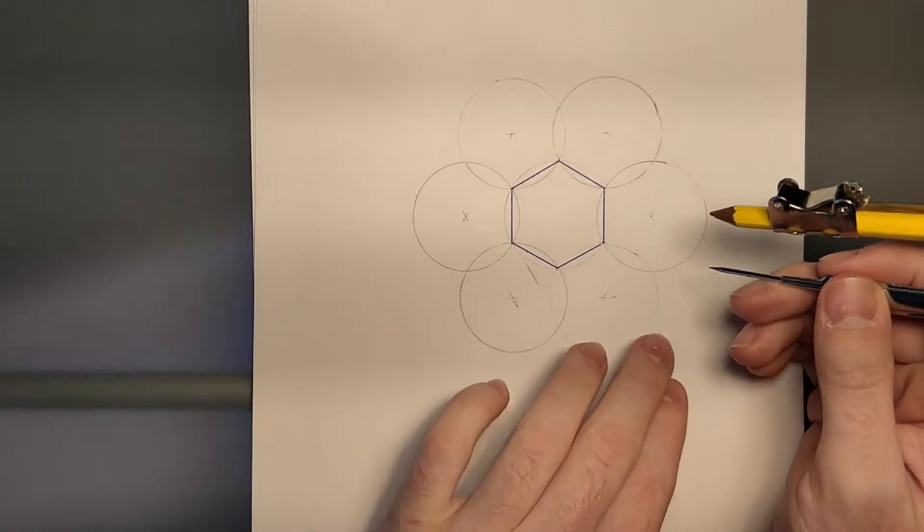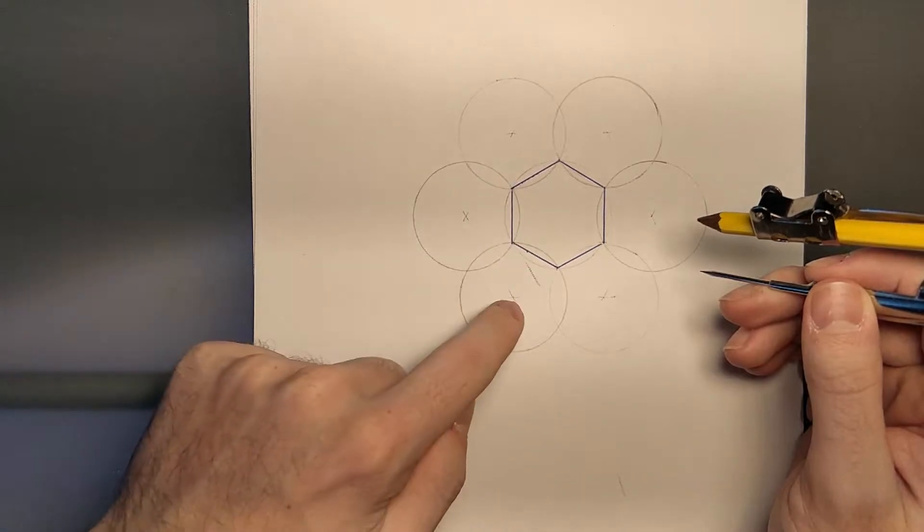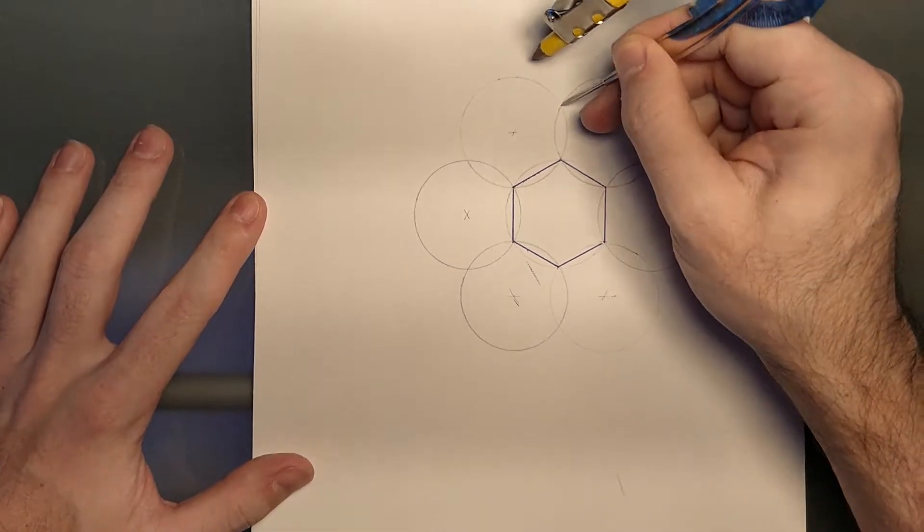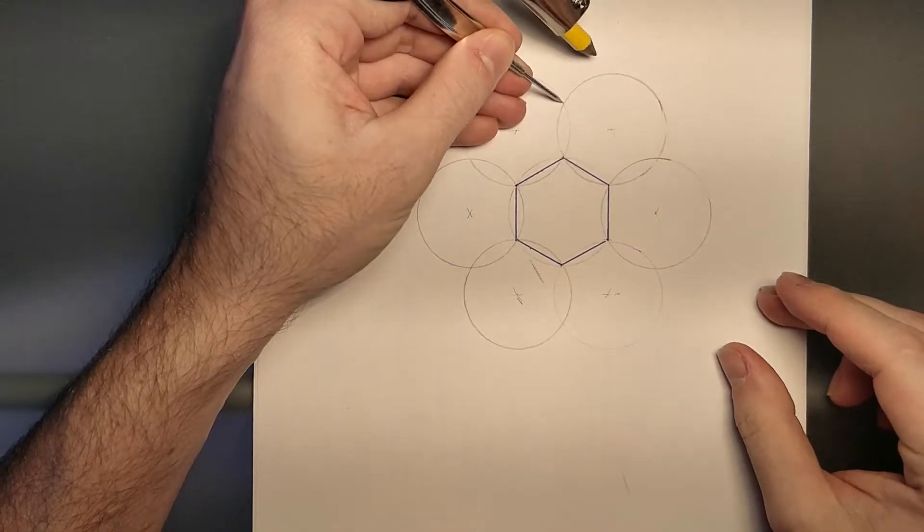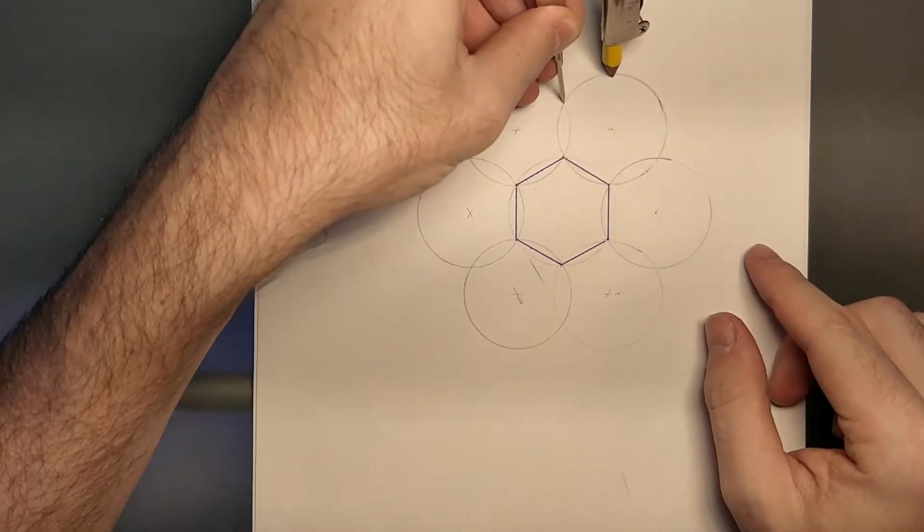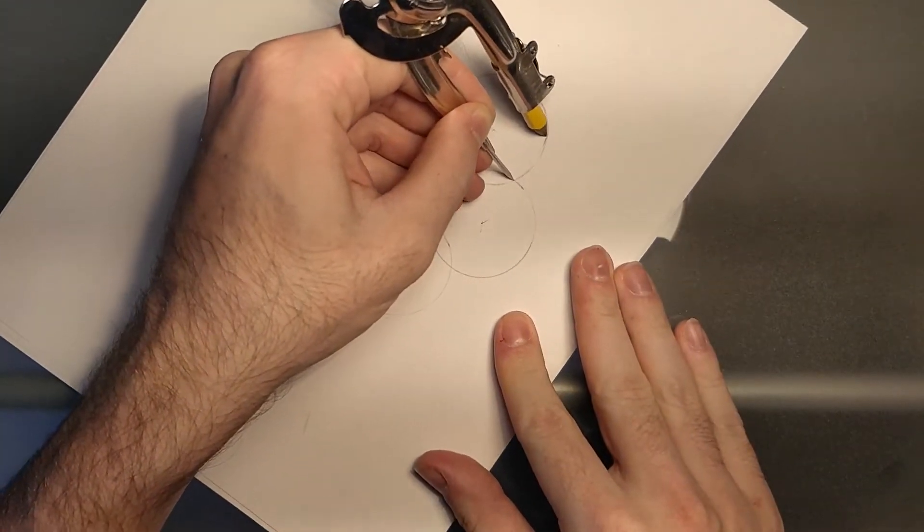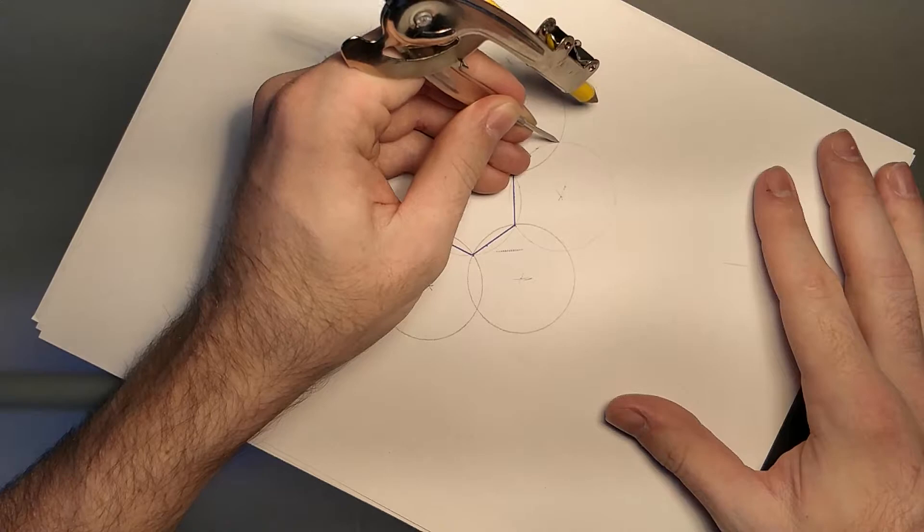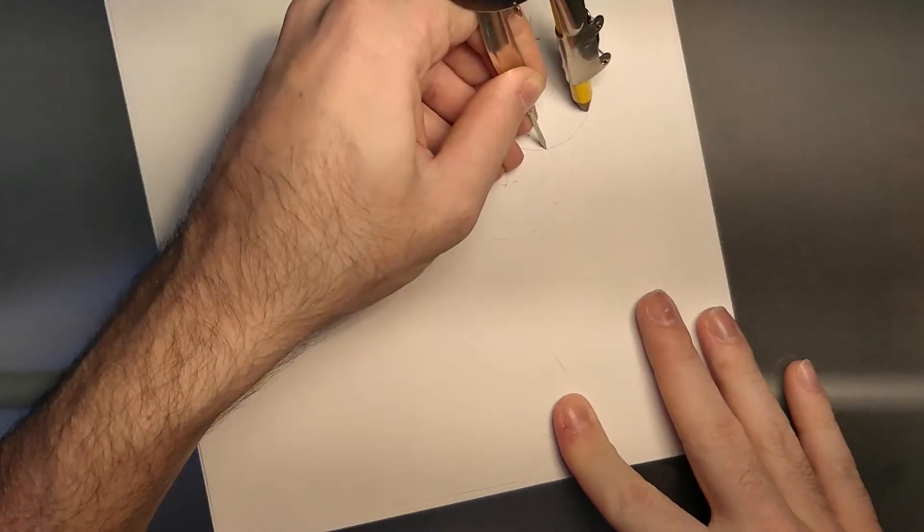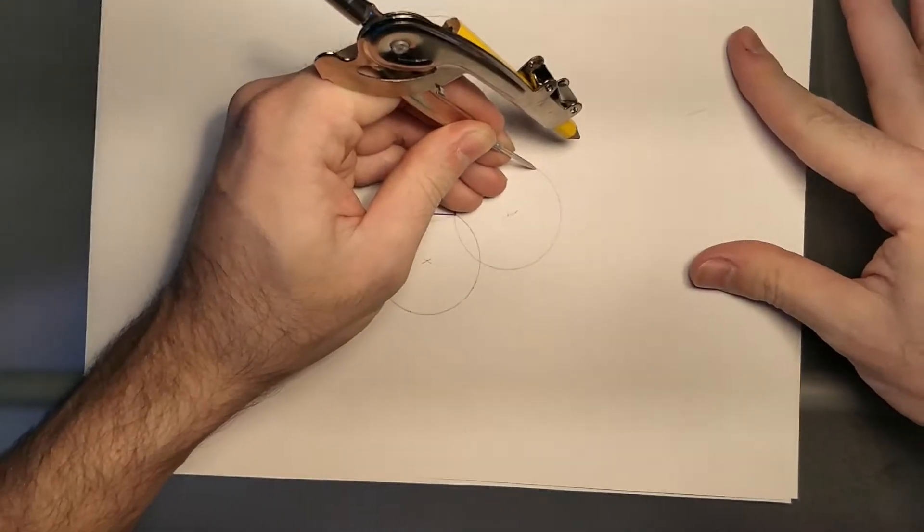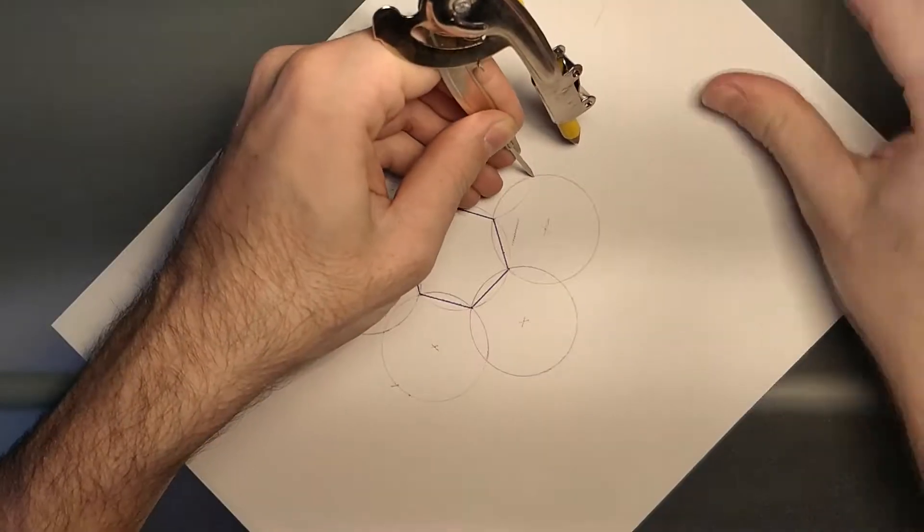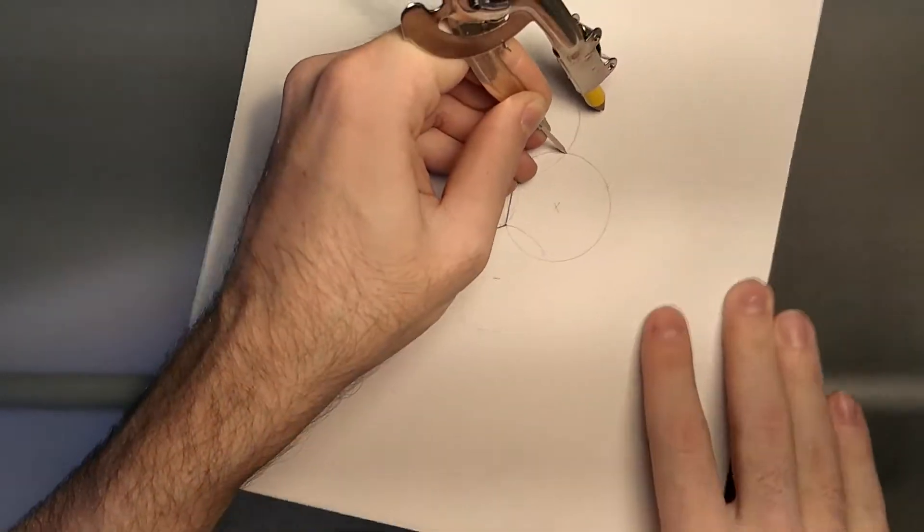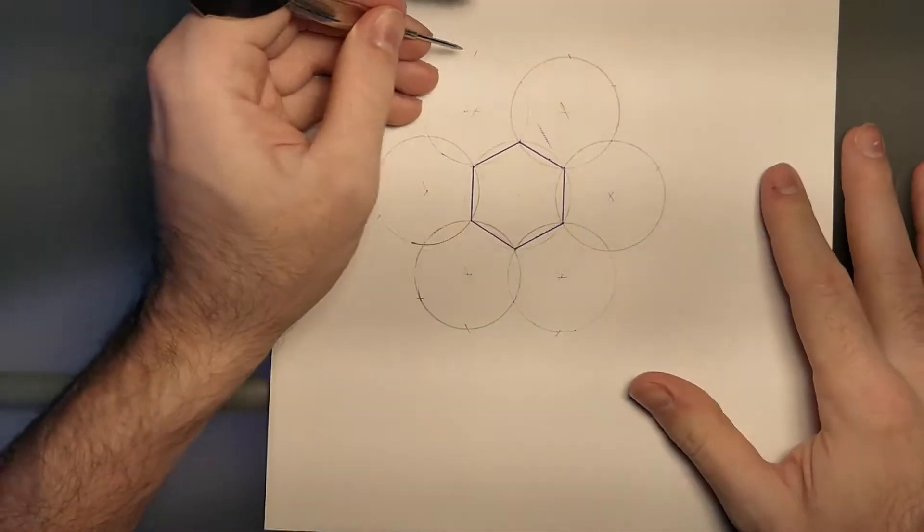To do that, it's the same thing as the first one. All we do is take the intersection of two circles, and wherever these intersections are, we go and draw a little line. Let's draw little marks on each one of these circles.